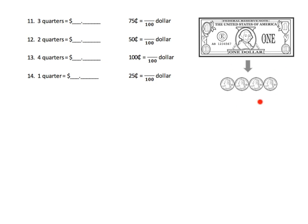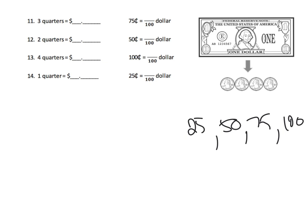One dollar equals four quarters. Three quarters is 75 cents — we want students to skip count 25, 50, 75, 100. So three quarters is 75 hundredths of a dollar, written as 0.75. And one quarter is 25 cents, so that's 25 hundredths of a dollar, written as 0.25.